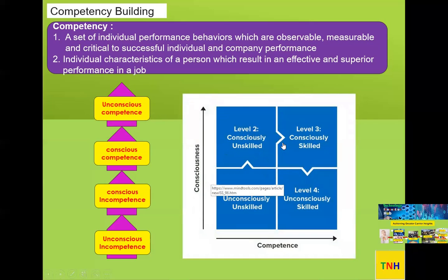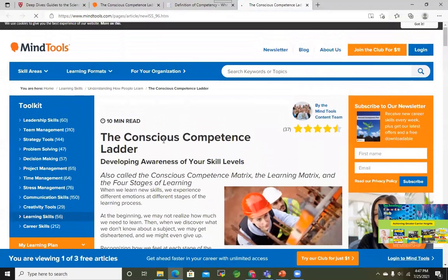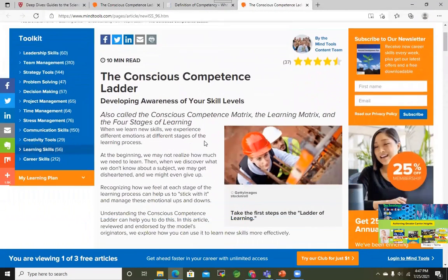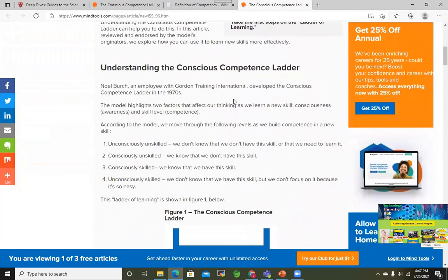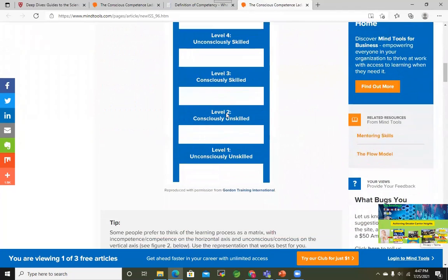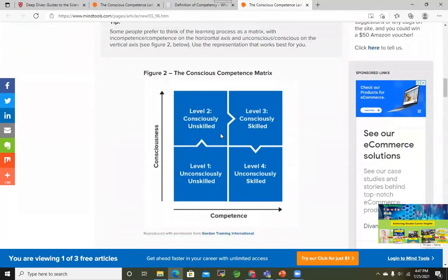This can also be presented as four dimensions: Level 1 — unconsciously unskilled; Level 2 — consciously unskilled; Level 3 — consciously skilled; Level 4 — unconsciously skilled. If you click the reference link, this is from Mind Tools, which explains the conscious competence ladder and developing awareness of your skill level. You can see all four levels explained in detail there.